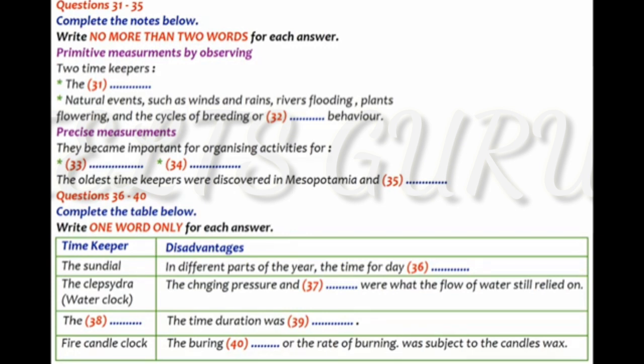In addition, the sundial was of no use at night, so a water clock was invented. The water clock, or clepsydra, appeared to have been invented around 1500 BCE, and was a device which relied on the steady flow of water from or into a container. Measurements could be marked on the container or on a receptacle for the water. It was reliable, but the water flow still depended on the variation of pressure and temperature from the top of water in the container.